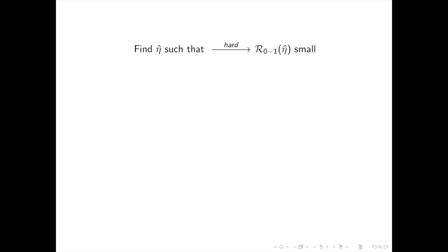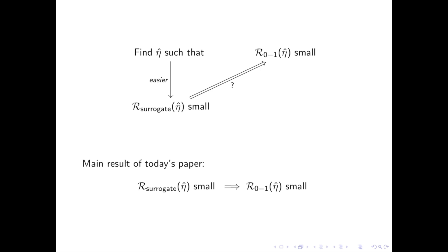The idea here is that it is hard to find eta hat minimizing the 0,1 risk. So instead, we look for eta hat minimizing the surrogate risk. This paper proves that eta hat also has a small 0,1 risk.